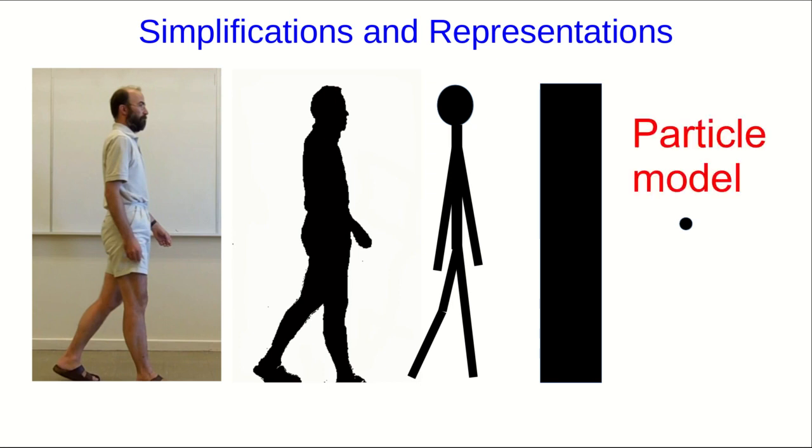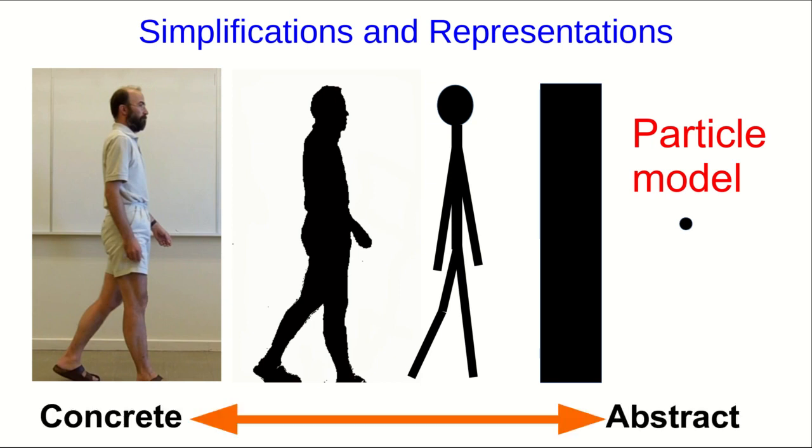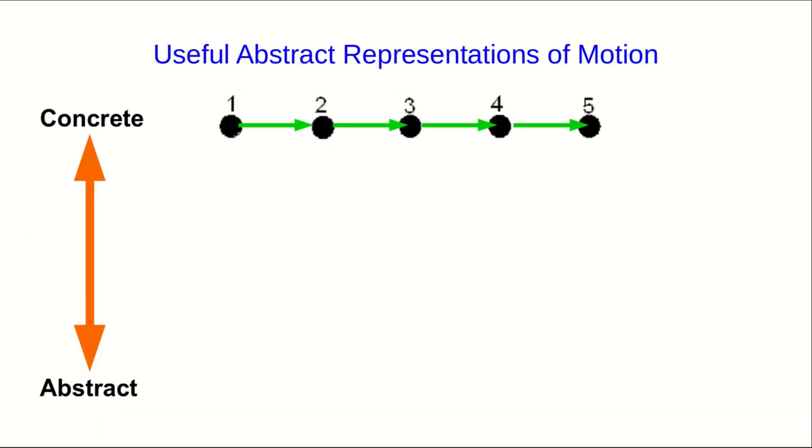This is something we call the particle model, and we'll use it all through this course. What we see here is a progressive simplification from a concrete representation of me to a more abstract representation. When something is moving, and we don't care about its shape, and it isn't rotating, and it doesn't have internal motions going on, we'll often represent it just by a point using the particle model. And then we can represent the motion by showing it at various different times, often with velocity vectors in between.